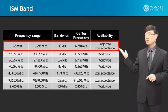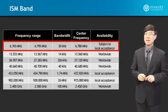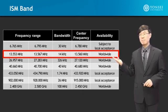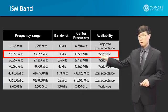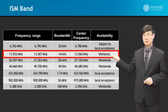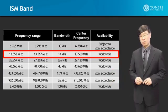This frequency range is not always going to be permitted. Just because it says ISM band on the box and on the device does not mean it is an ISM band that is approved everywhere in the world. The next ISM band is at the 13 MHz range, from 13.553 to 13.567 MHz, with a bandwidth of 14 kHz. Most interestingly, it has availability specified as worldwide. At the bottom, we also have a worldwide designation at the 2.4 GHz range.